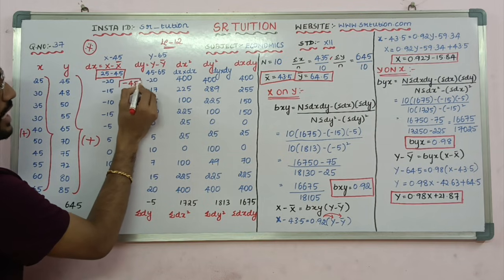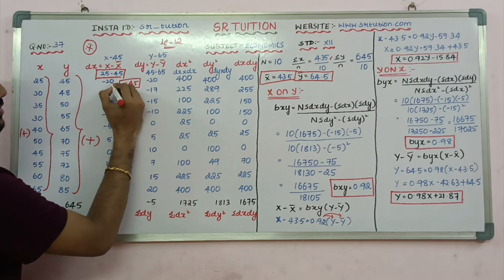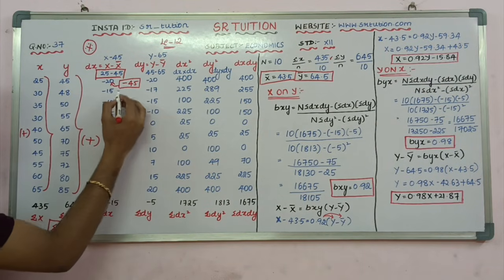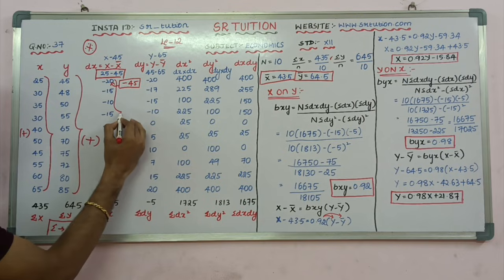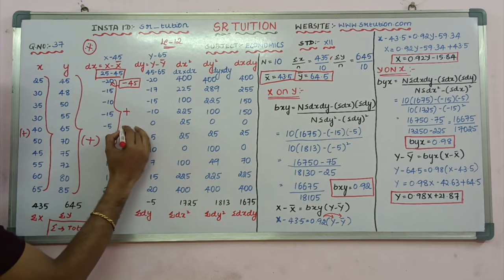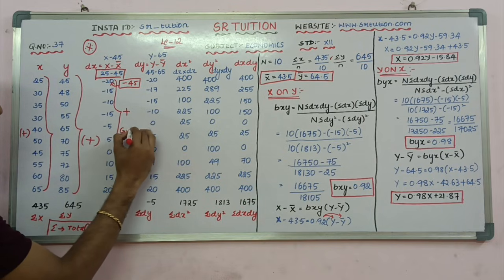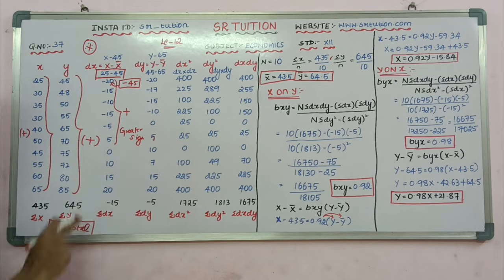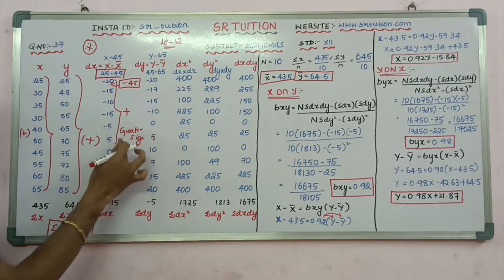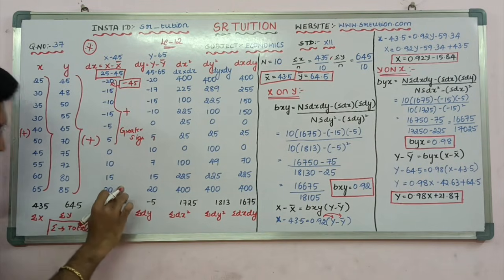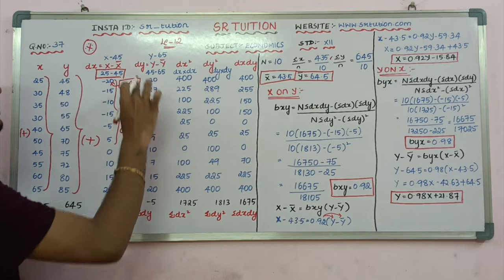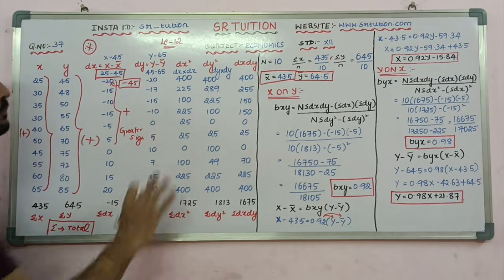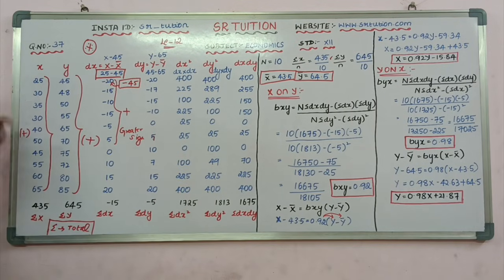x minus 45. Now we have to add the signs — the greater number sign, which is minus. The last step: summation dx is minus. Next is dy, that is the same. Summation dy is minus 5.